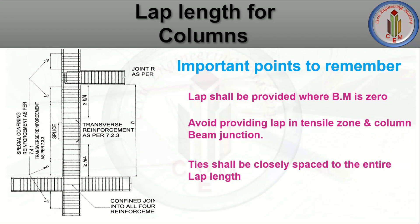Now let's discuss some important points about where we provide lapping. Lapping shall be provided where the bending moment is zero. Since the column is a compression member, stresses will be more at the column-beam junction, so in that area we should not provide the lap. Near the column-beam support, the bending moment is more, and in the middle of the column the bending moment is less — so in that middle area we need to provide the lapping. Avoid providing lapping in the tensile zone and at the column-beam junction.